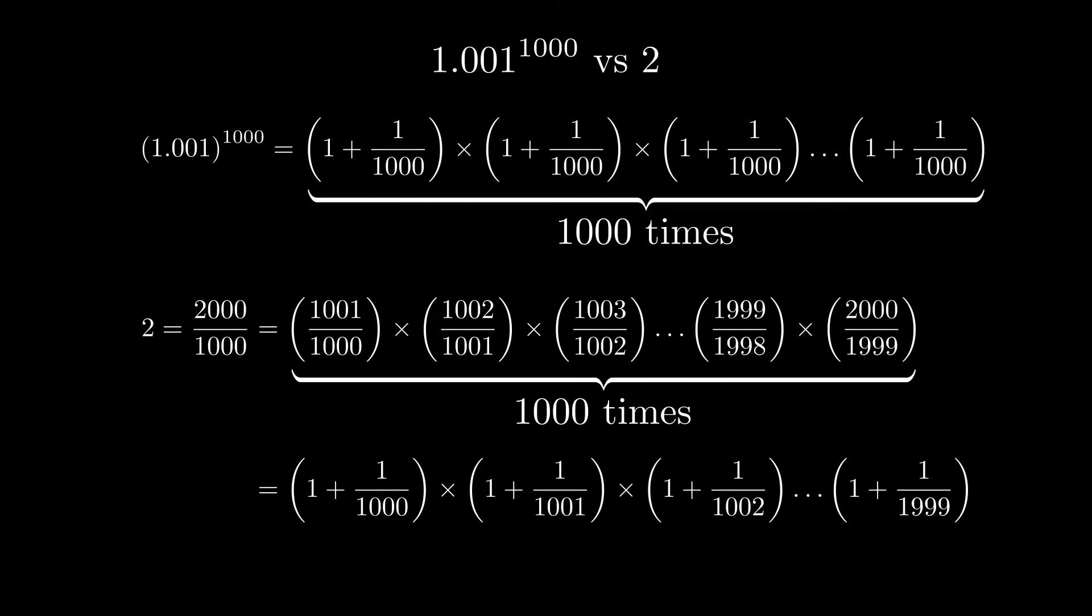That's what you would get if you wrote this fraction as a whole number plus a proper fraction. And it's the same with 1,002 over 1,001. That's the same as 1 plus an additional 1 over 1,001. This pattern continues all the way down the product.